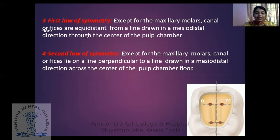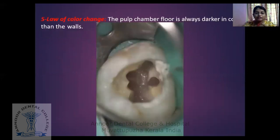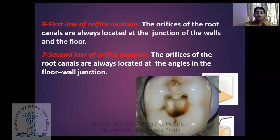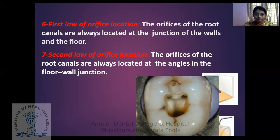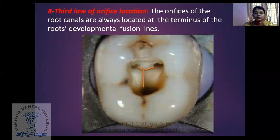The second law of symmetry: except for the maxillary molars, canal orifices lie on a line perpendicular to a line drawn in a mesiobuccal direction — the canals are always perpendicular to the central line drawn in the mesiodistal direction. The law of colour change: the pulp chamber floor is always darker than the walls, which helps in locating the canal. The first law of orifice location: the orifices of the root canals are always located at the junction of the walls and the floor. The second law of orifice location: the orifices are always located at the angles in the floor-wall junctions. The third law of orifice location: the orifices of the root canals are always located at the terminus of the root developmental fusion lines.